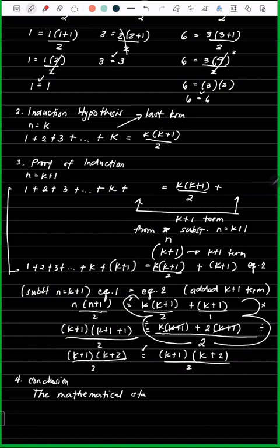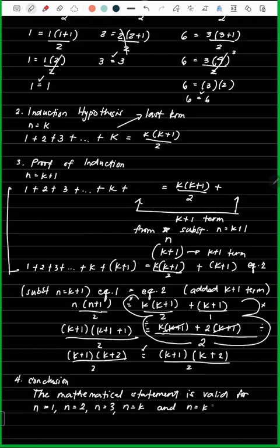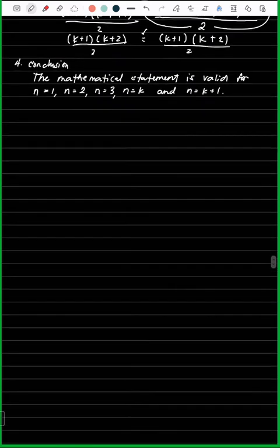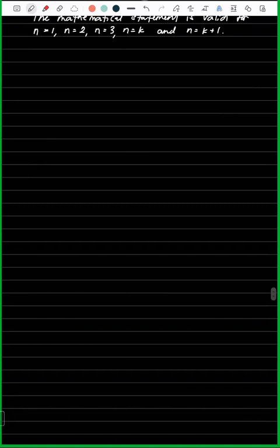For the conclusion, all we need to do is state the obvious: the mathematical statement is valid for n=1, n=2, n=3, n=k, and n=k+1. That is the conclusion when the mathematical statement is valid. That completes the first example.